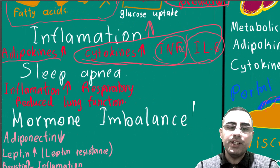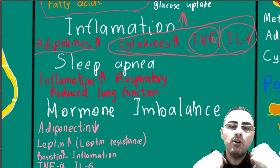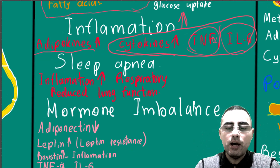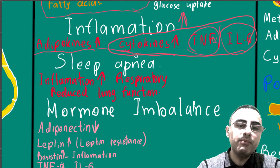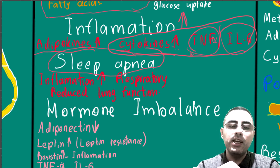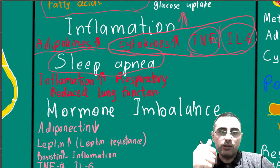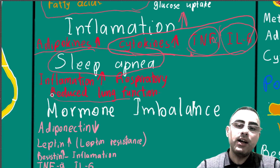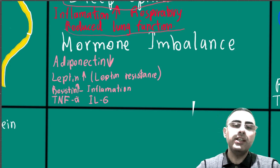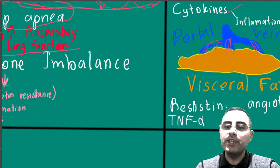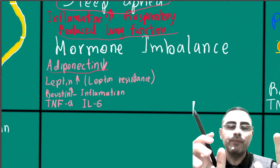Visceral fat also affects sleep and causes sleep apnea. Research confirms that people with more visceral fat commonly have sleep apnea. This happens because inflammation from visceral fat causes inflammation in the respiratory system. Abdominal fat also presses on the diaphragm, reducing lung function.